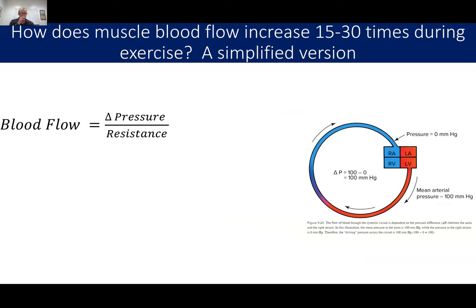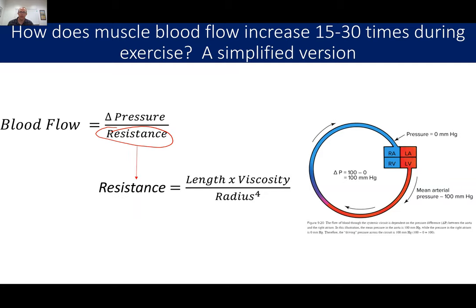Blood flow equals the change in pressure over resistance. Higher resistance means low flow; a higher pressure difference means higher blood flow. What causes low resistance is a large radius — if you dilate everything, resistance is very low. During exercise, you dilate the arteries in skeletal muscle, creating very low resistance and high flow there, while you constrict the arteries in the gut, creating high resistance and low flow. Just changing resistance directs blood flow where you need it.